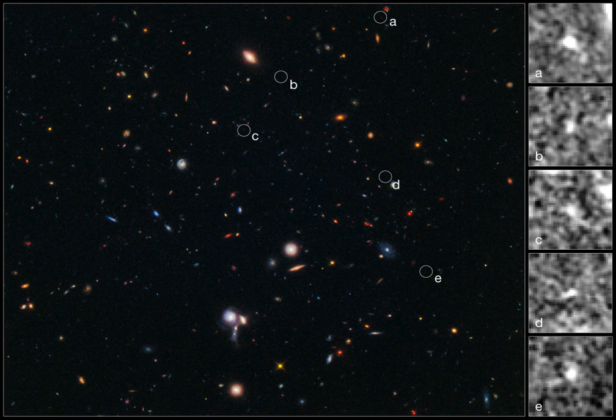One of the key features of clusters is the intracluster medium (ICM). The ICM consists of heated gas between the galaxies and has a peak temperature between 2 to 15 keV that is dependent on the total mass of the cluster.